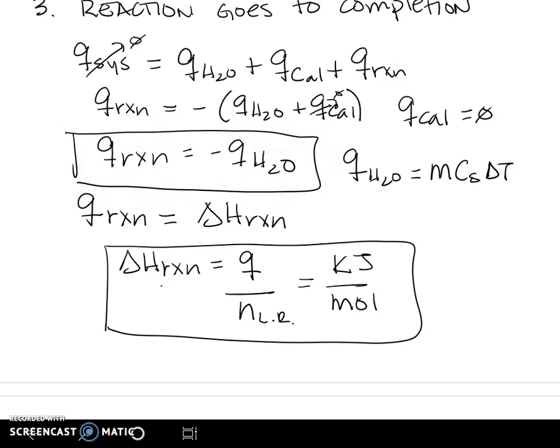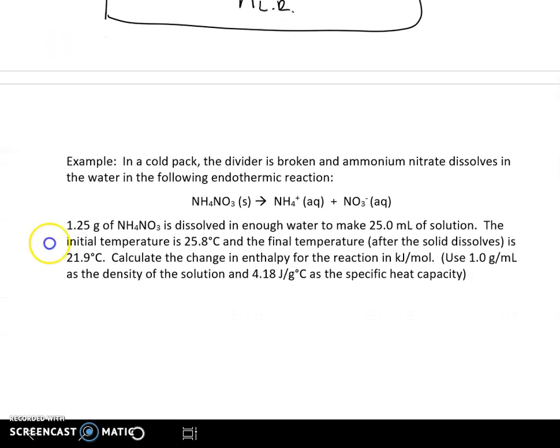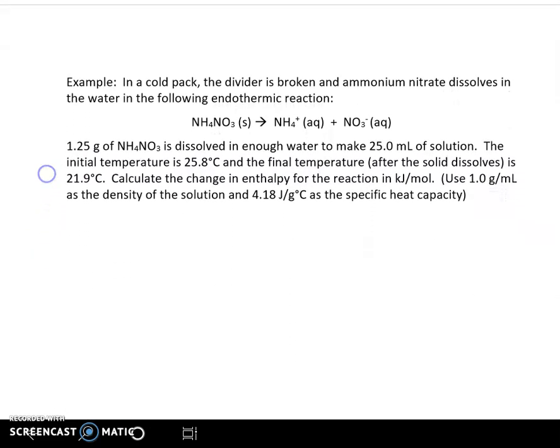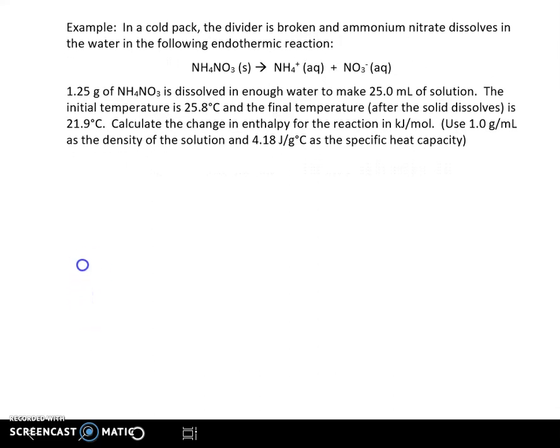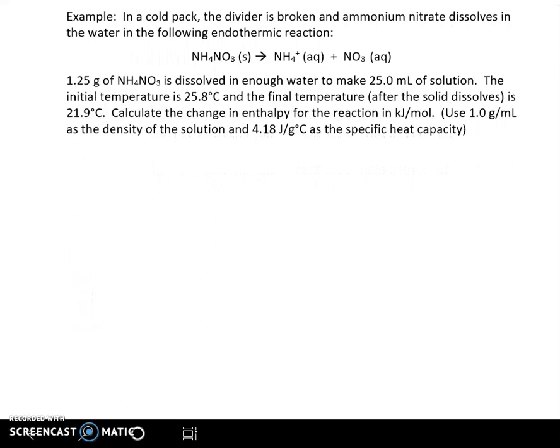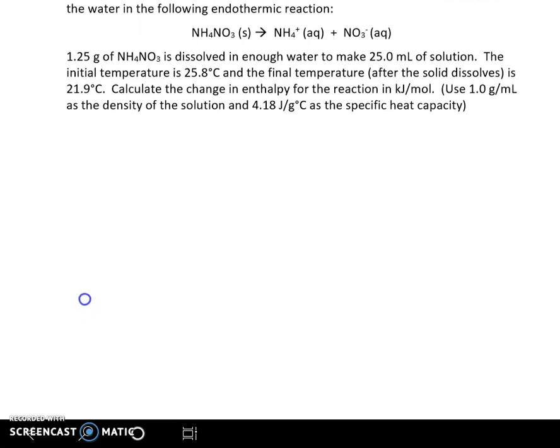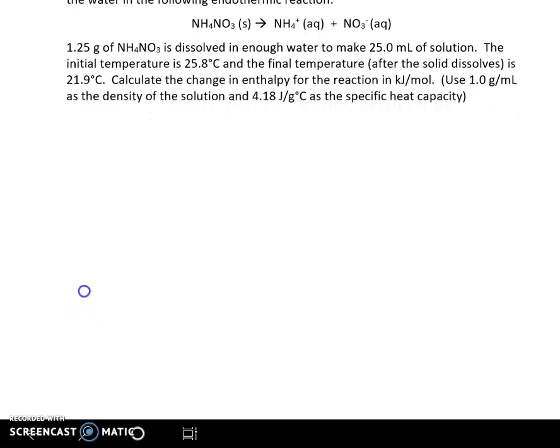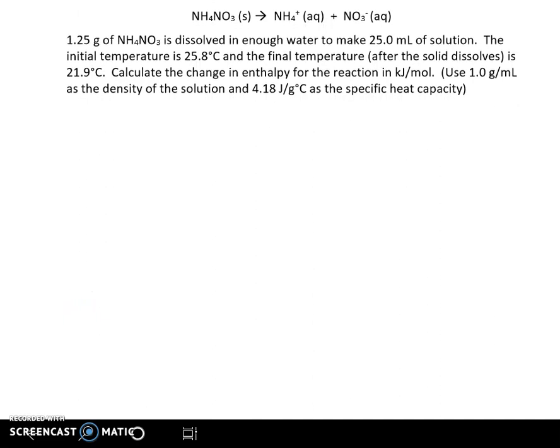So let's go ahead and do an example problem. In a cold pack, the divider is broken and ammonium nitrate dissolves in the water with the following endothermic reaction. You have 1.25 grams of ammonium nitrate and it's dissolved in enough water to make 25 mils of solution. The initial temp is 25.8 degrees Celsius and the final temp is 21.9. Calculate the change in enthalpy for the reaction in kilojoules per mole.